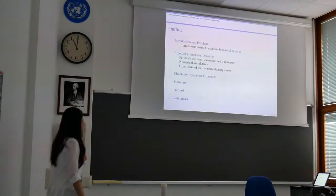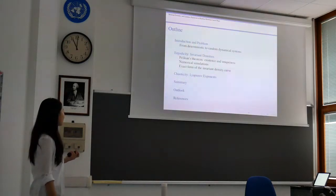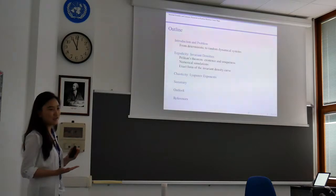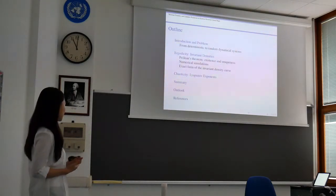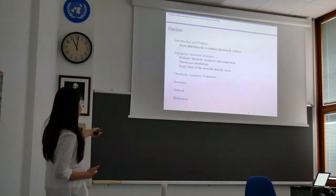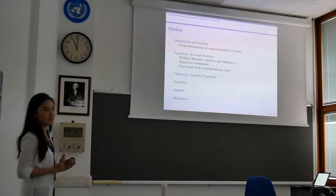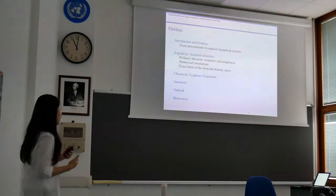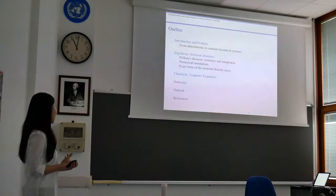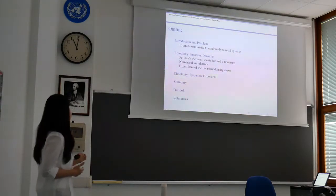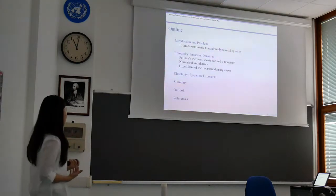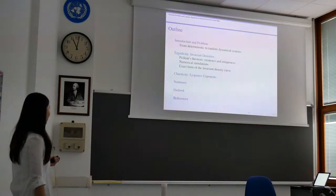I will give you the outline of my talk. First, I will introduce the problem from deterministic to random dynamical systems. In the first part I will discuss ergodicity characterized by invariant densities: stating Pelikan's theorem for existence and uniqueness, giving numerical simulations, and extracting the exact form of the invariant density curve. In the second part we will study the chaoticity in terms of Lyapunov exponents, and finally a summary, outlook, and references.